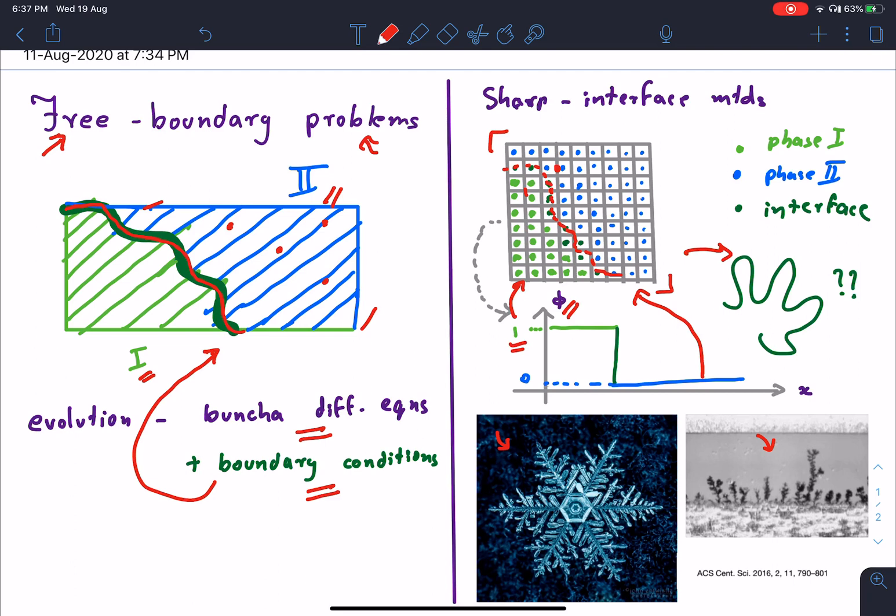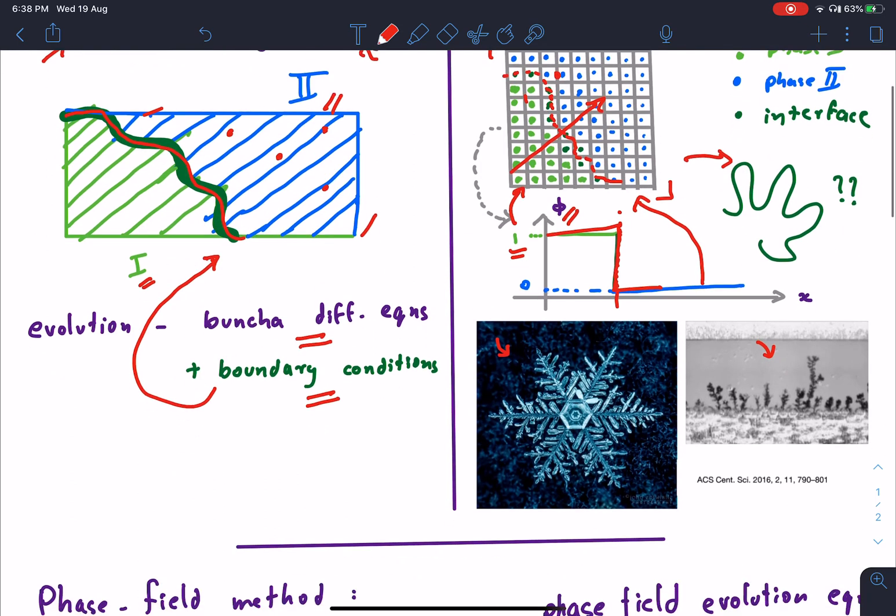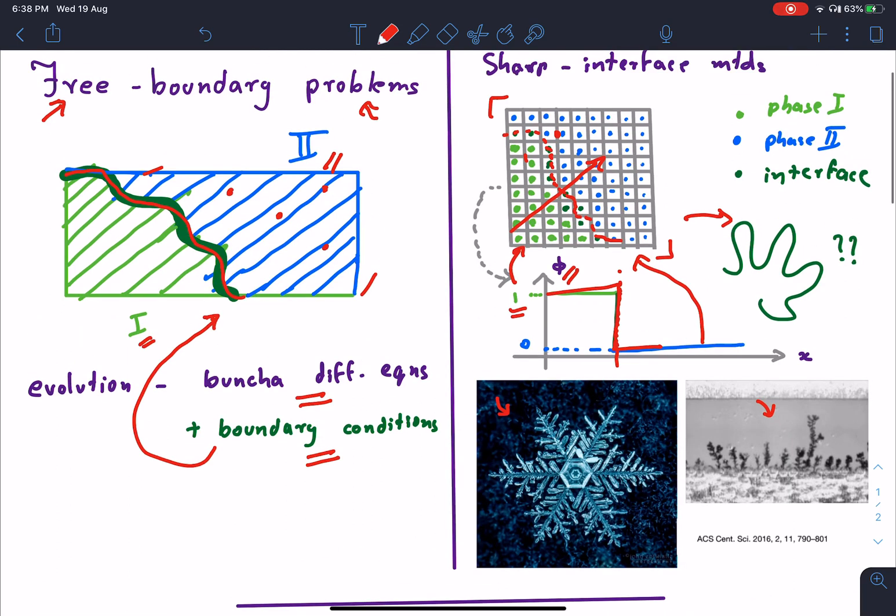If you take a cross section along the boundary, we can see that the order parameter has a sharp drop—it sharply drops from one to zero. The phase field method takes a different approach to the problem. By taking this different approach, we can get around this limitation of not being able to track complicated boundaries. The central idea is to have a diffuse interface.